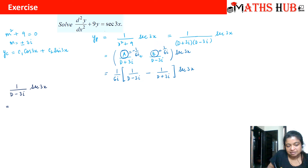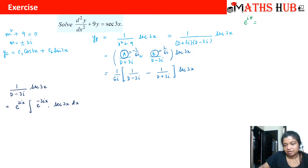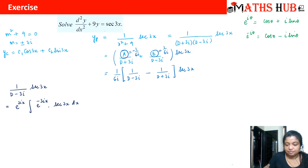Let me solve the first term: 1/(d − 3i) times sec(3x). According to Rule 6, where a = 3i, this becomes e raised to power 3i·x times integration of e raised to power −3i·x times sec(3x) dx. To evaluate this, we use the Euler expansion: e^(iθ) = cosθ + i·sinθ and e^(−iθ) = cosθ − i·sinθ.